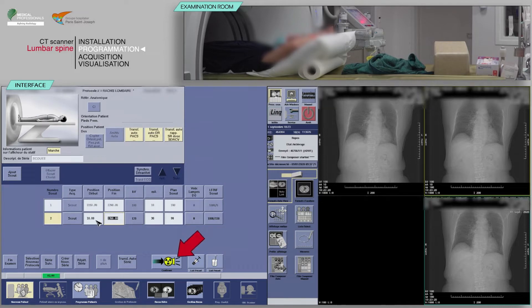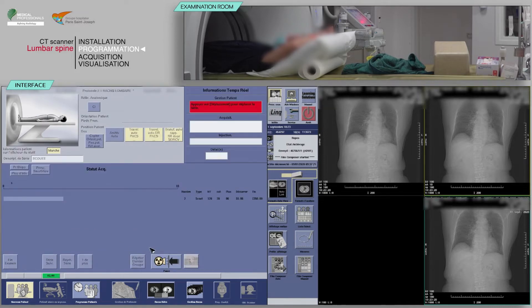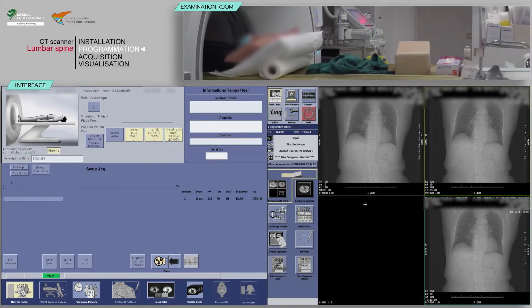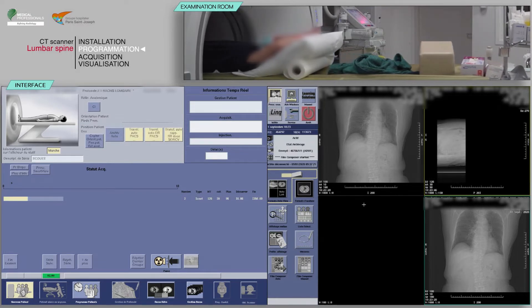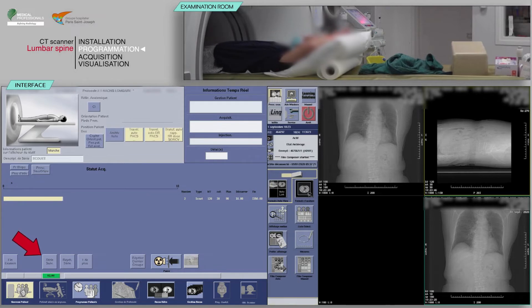You will now need to click Confirm again to obtain the acquisition of the lateral scan mode. On the keyboard, move the table and launch the acquisition when the buttons flash. Click on Next Series.